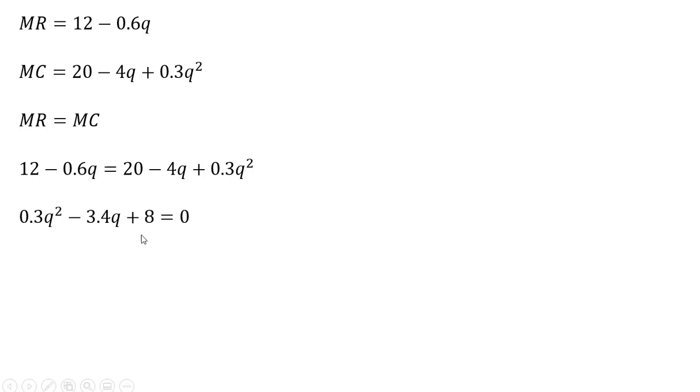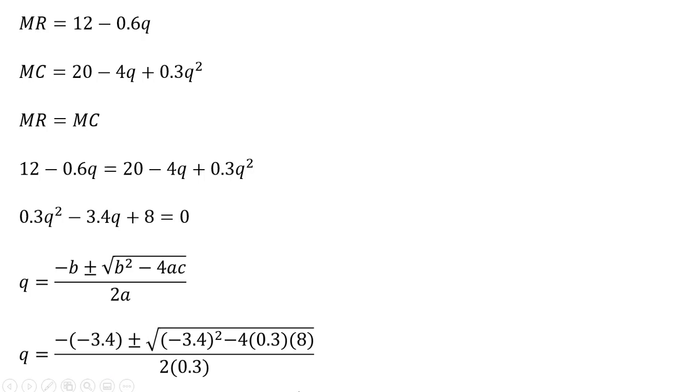Now we have a quadratic equation, so we're going to use the quadratic formula. a is this 0.3, b is this minus 3.4, and c is 8. We're going to make those substitutions in. Once again, this b is minus 3.4, a is 0.3, and c is 8. Now simplifying.